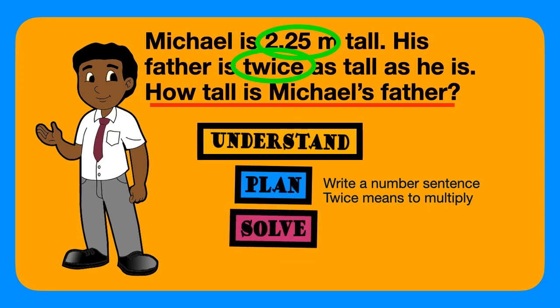We need to set up now our number sentence. 2 and 25 hundredths times 2. Twice means to double. Let's multiply that now. Set up our problem. 2 times 5 is 10. We're going to regroup and place our 1 in the tenths place. 2 times 2 is 4, plus 1 is 5. And 2 times 2 is 4.